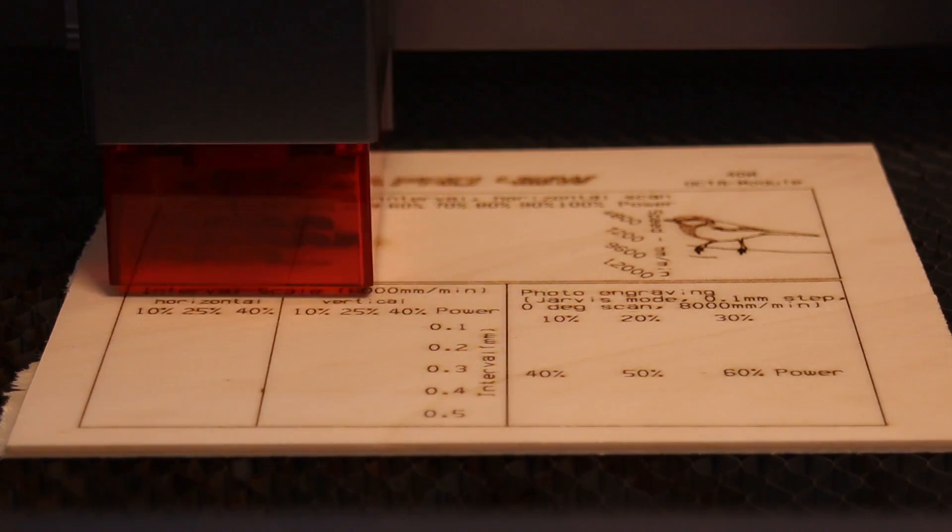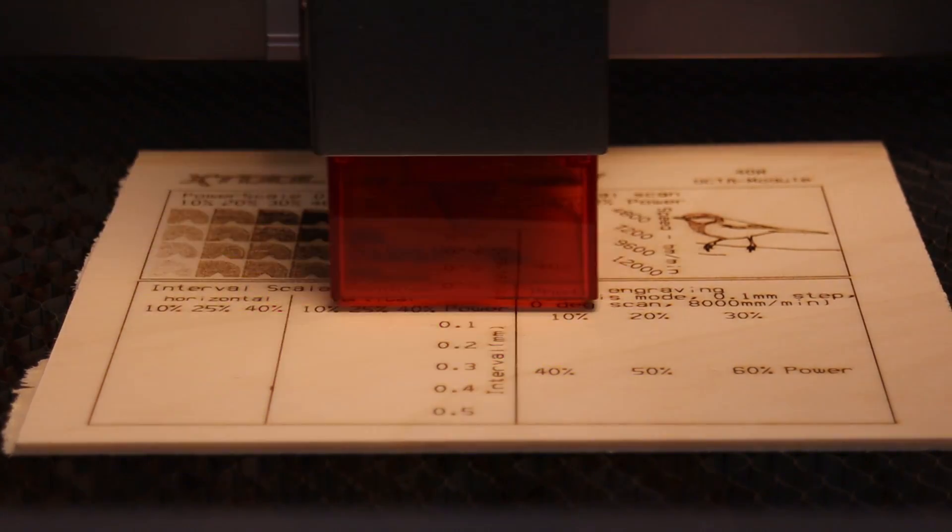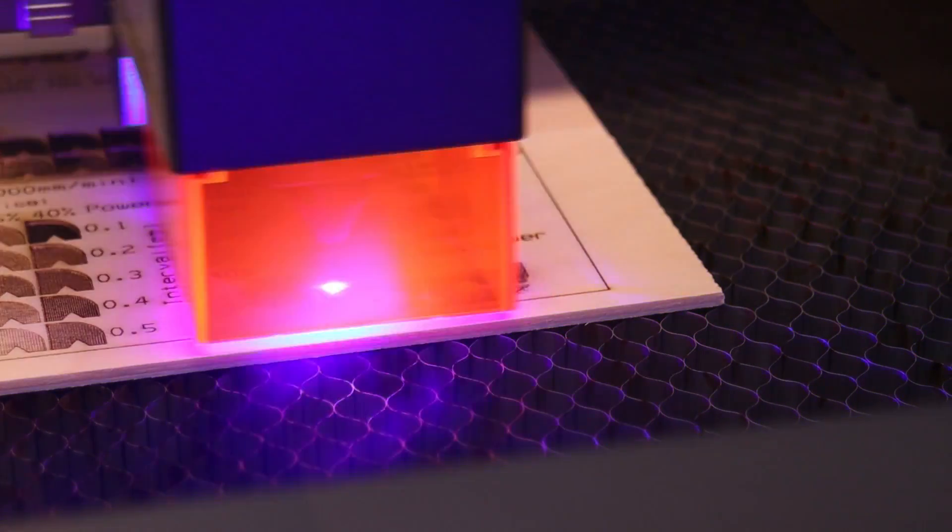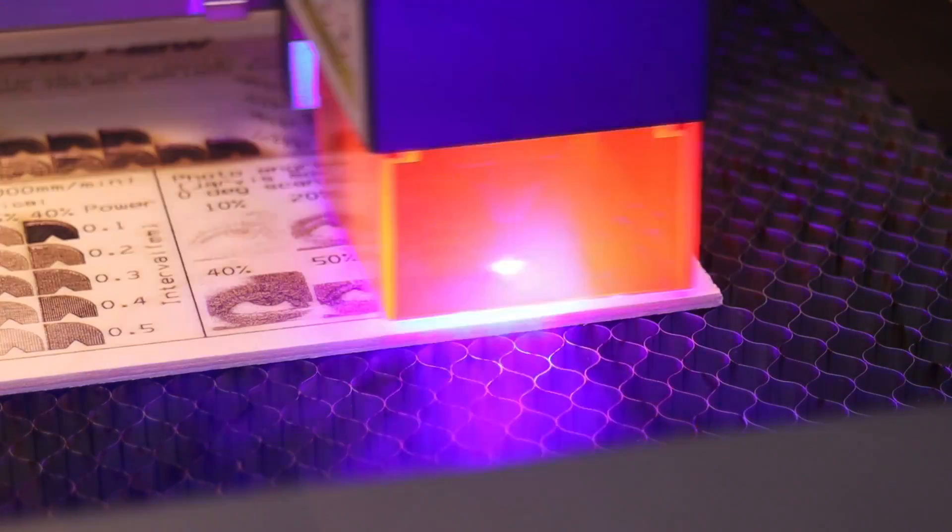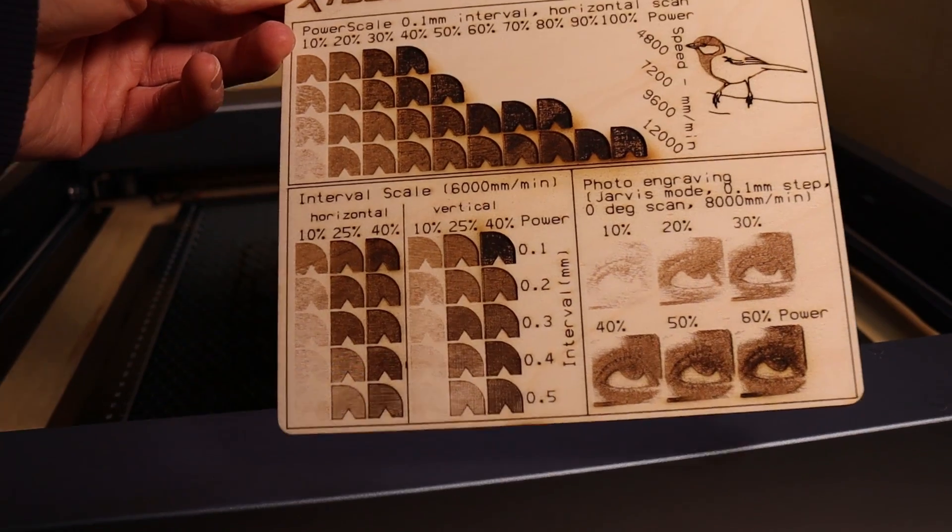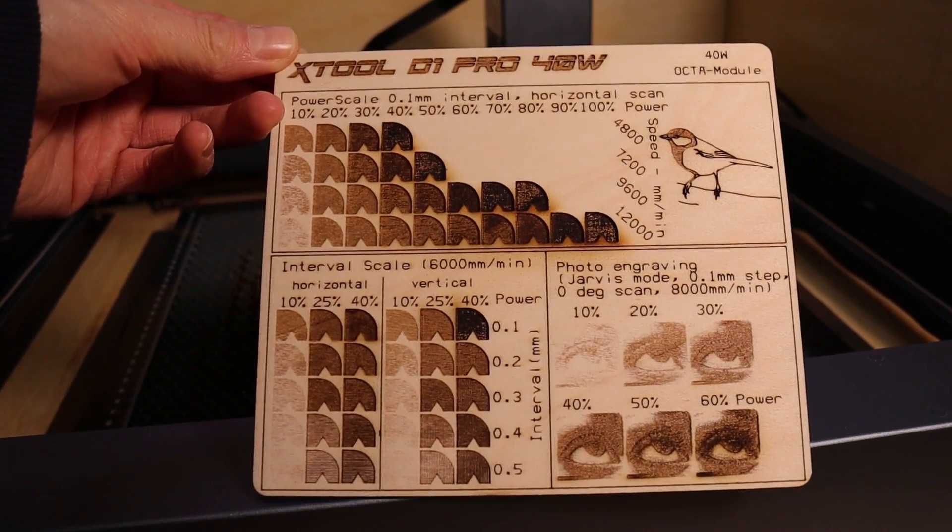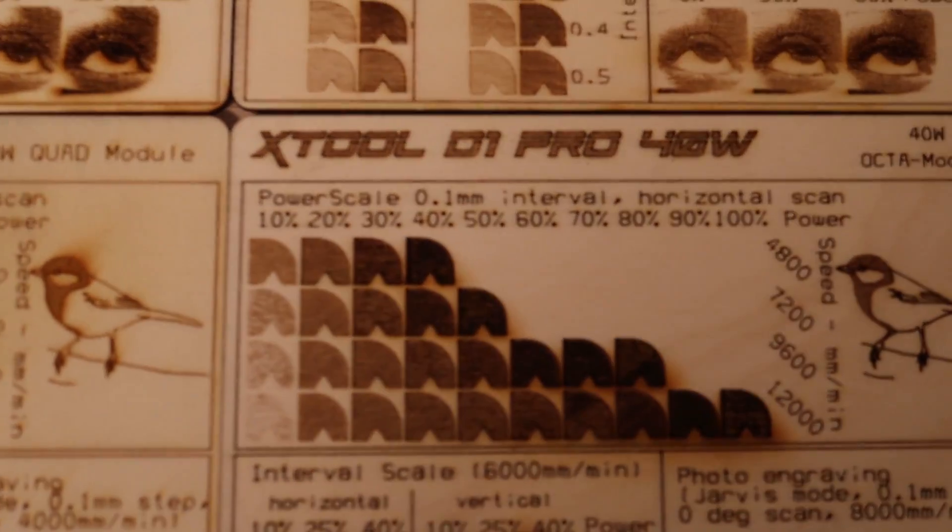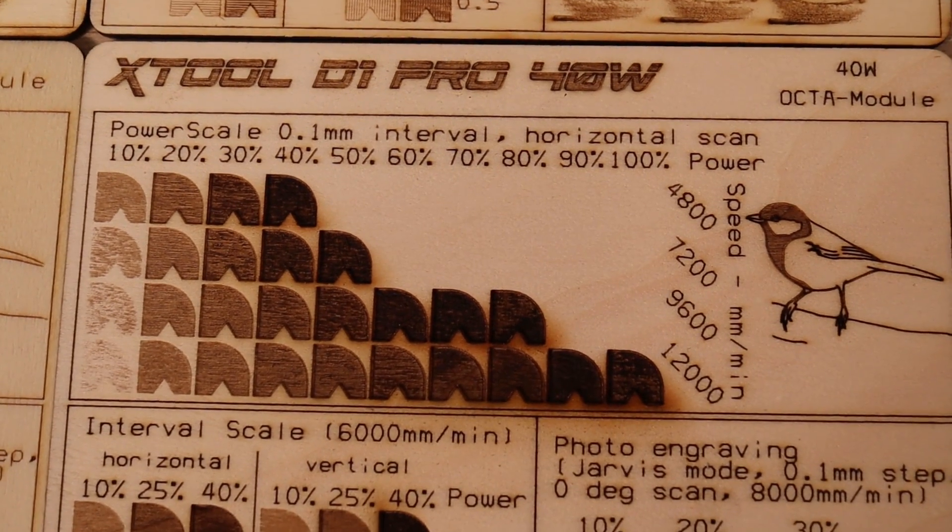I modified my existing 20W pattern by simply doubling all engraving speeds since this machine has twice the power. The result looks very impressive. This time I used a small amount of air assist to get rid of the smoke stains.